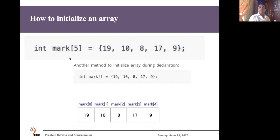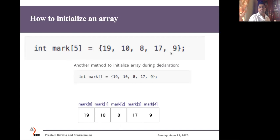When declaring an array, we can also initialize it at the same time. For example, here I am initializing an array called marks with type integer, using curly brackets and giving the initial elements inside. I have given five elements, and each element will be assigned to each slot. When you write marks[0], you get the first element; marks[1] returns the second element, and so on. By using square brackets and giving the index number, we can individually access elements.